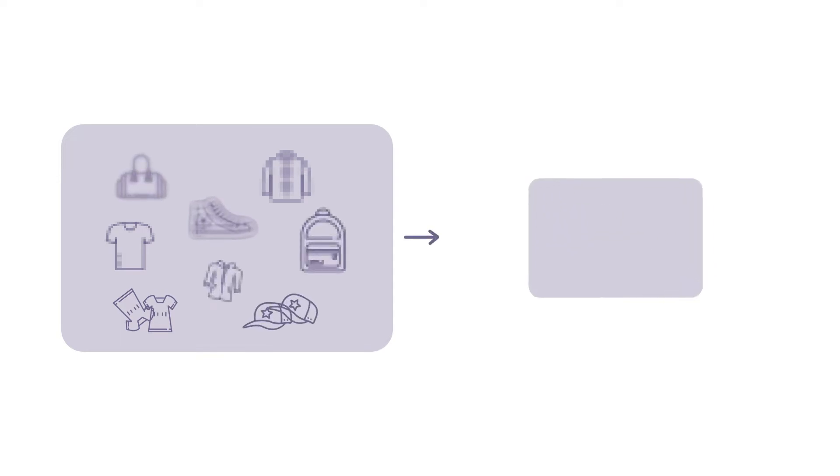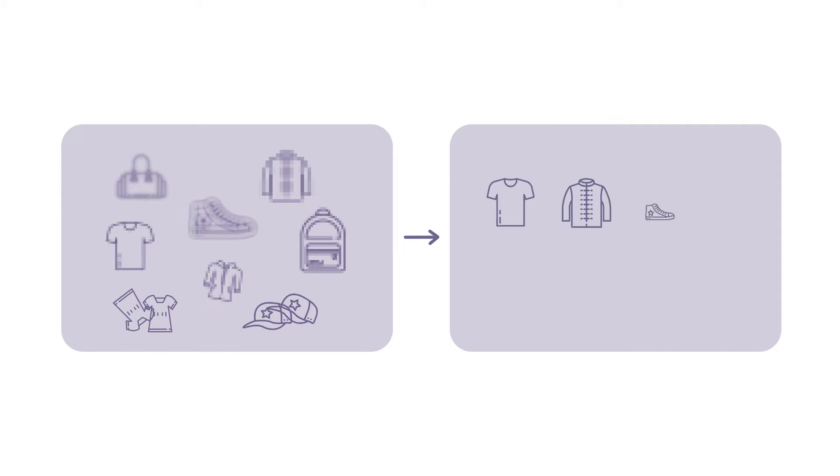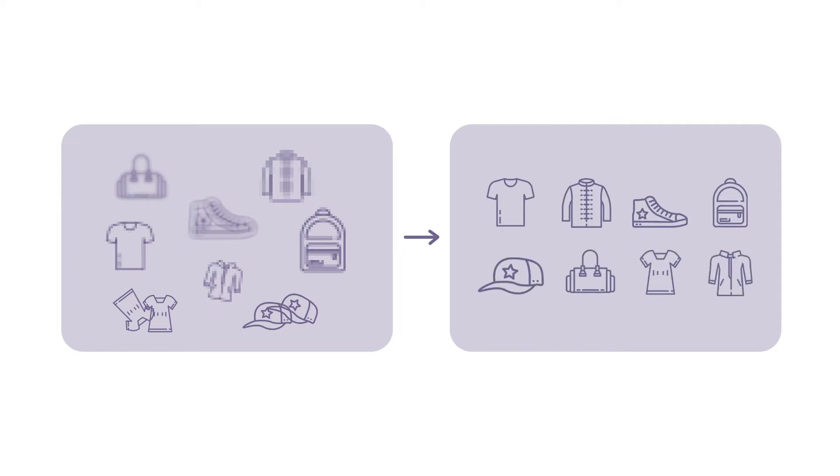Data cleaning is an important step in preparing your data for training your model, as inaccuracies in data lead to inaccuracies in the image classification model. Well-organized data sets you up for success when it comes to training an image classification model, or any AI model for that matter. For example, if you have a set of fashion images, you want to ensure all images are high quality, well lit, and there are no duplicates. The pre-processing step is where we make sure all content is relevant and products are clearly visible.